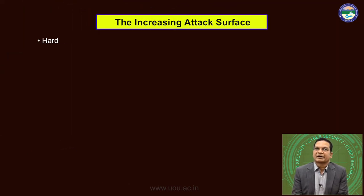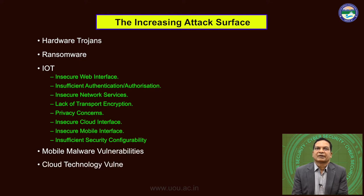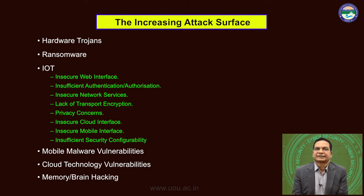Emerging threats include hardware trojans and ransomware. Regarding IoT — the Internet of Things — vulnerabilities include insecure web interfaces, insufficient authentication and authorization, insecure network services, lack of transport encryption, privacy concerns, insecure cloud interfaces, insecure mobile interfaces, and insufficient secure configurability. Other emerging threats include mobile malware vulnerabilities, cloud technology vulnerabilities, and even memory or brain hacking — these are all emerging threats by hackers on the digital infrastructure.